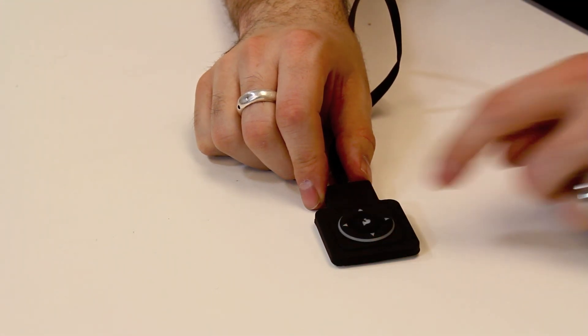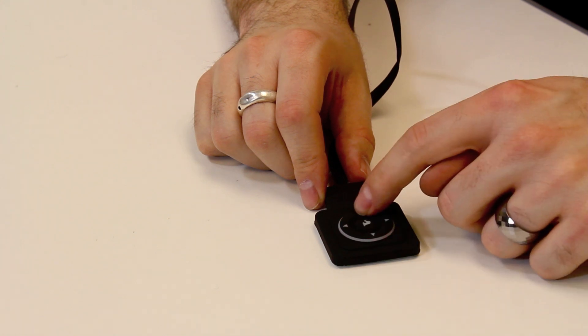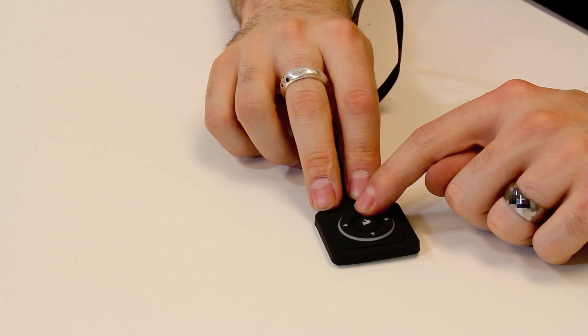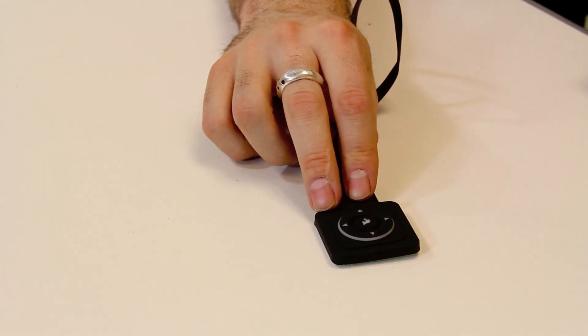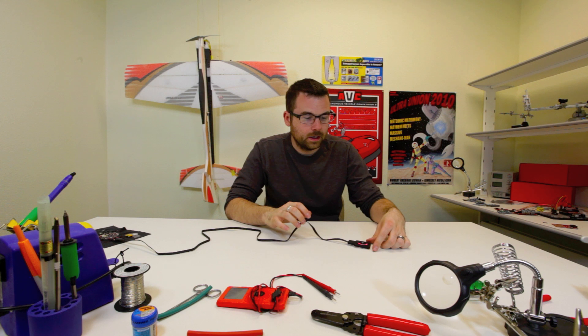And the center button turns the LED on and off, and the up and down will dim the LED up and down. And of course, you can use these buttons for whatever you want, program them into your Arduino or your LilyPad, and you've got four selection buttons and the middle one. So hopefully this will make it into your next e-textiles project.